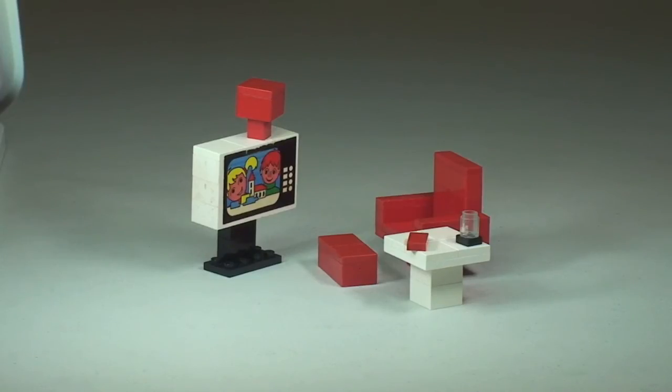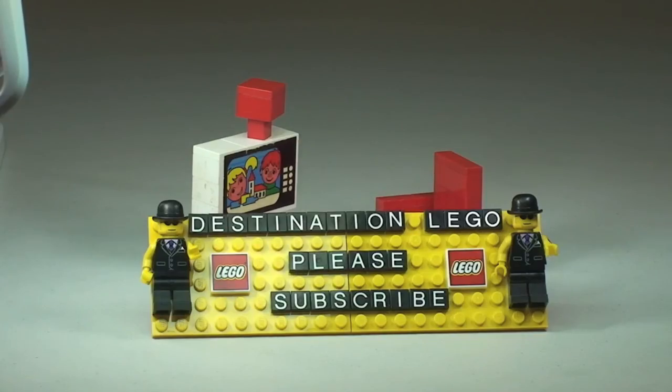Okay guys there we go then. That's my review of this vintage set complete. So again just to recap this is set number 274. And this is the color TV and chair from the Homemaker theme from 1974. Let me know what you think of these vintage sets guys down in the comments section. And if you've enjoyed this video please do give it that big thumbs up. And if you haven't done so already please do go ahead and subscribe to my channel. And I look forward to seeing you all in the next video. Cheers!